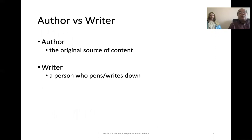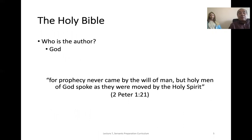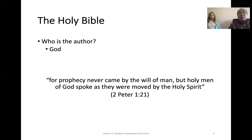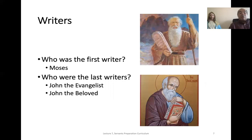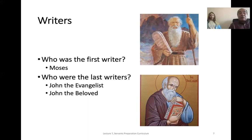First, we'll start by knowing the difference between the author and the writer. The author is the original source of content, while the writer is the person who pens or writes it down. When it comes to the Bible, the author is God. As St. Peter said, "For prophecy never came by the will of man, but holy men of God spoke as they were moved by the Holy Spirit." 2 Peter 1:21. There were 40 writers in total, and it took approximately 1,600 years to write — the Old Testament around 1,500 years, and the New Testament around 100 years. The first writer was Moses and the last writer was John the Evangelist, or John the Beloved.